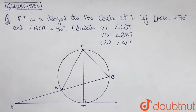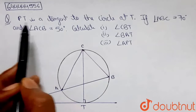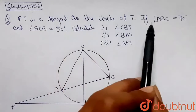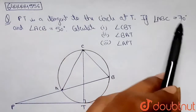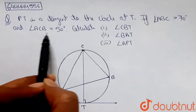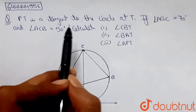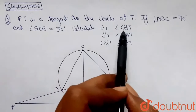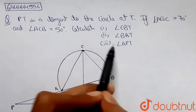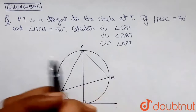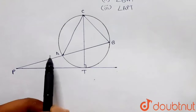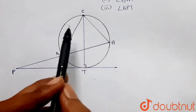Hello friends. The question says that PT is a tangent to the circle at T. If angle ABC is 70 degrees and angle ACB is 50 degrees, calculate angle CBT, angle BAT, and angle APT. So let's start — here's the figure with the help of which we have to find out these values.